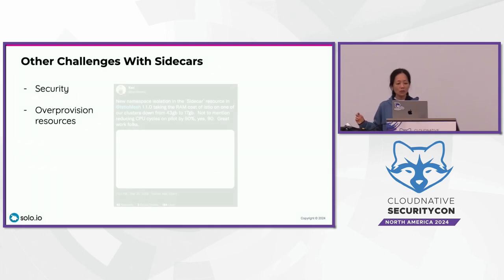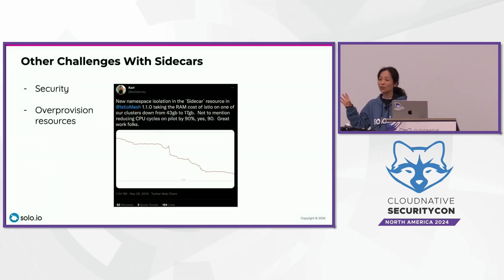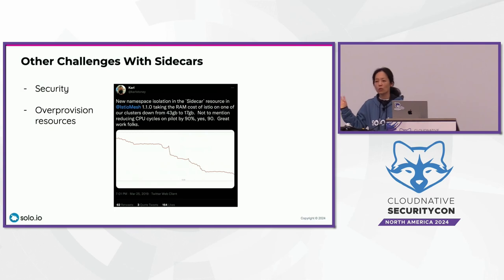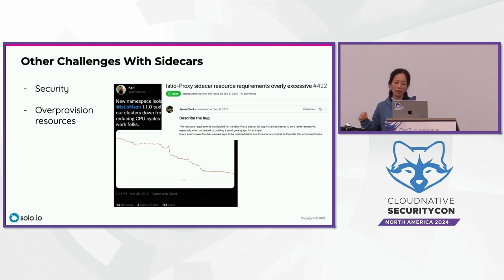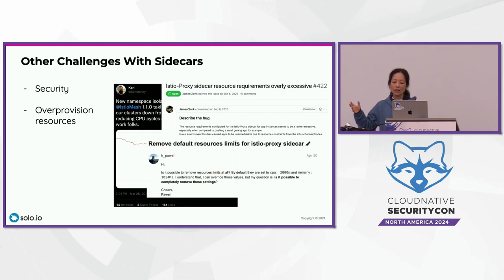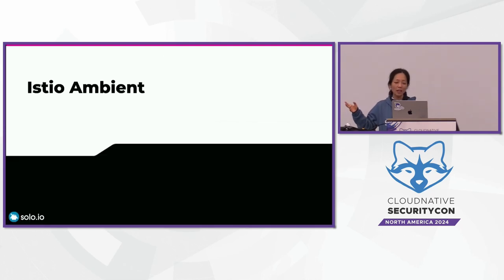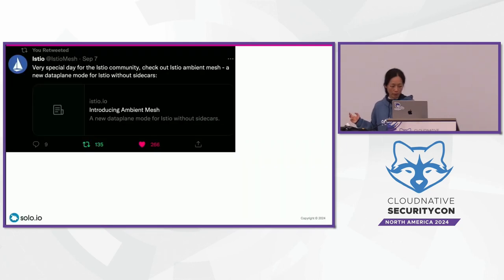There are other challenges with sidecars, primarily related to resources. I've seen people complain on Twitter that sidecars are using half of their service mesh infrastructure resources. A user always questioned us about the best way to configure sidecar resources — is the requirement too excessive for their needs? Can you remove the default resource limits for the Istio proxy sidecar? All these challenges led us to design Ambient in the Istio community.